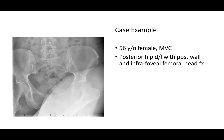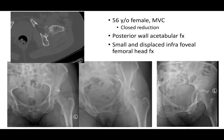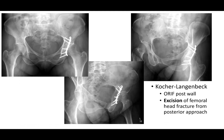Here's a case example: a 56-year-old female with a motor vehicle crash, posterior hip dislocation with a posterior wall and infrafoveal — Pipkin 1 — femoral head fracture. Post-reduction, you can see a posterior wall acetabulum fracture and a small displaced infrafoveal femoral head fracture. Because of the posterior wall, this is treated with open reduction internal fixation of the posterior wall fracture, and the relatively small femoral head fracture is excised.